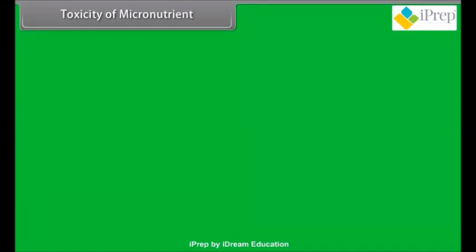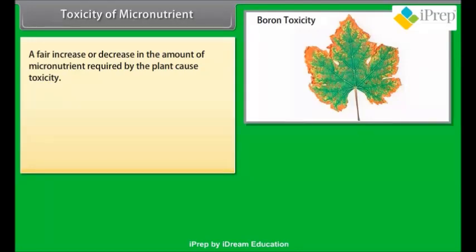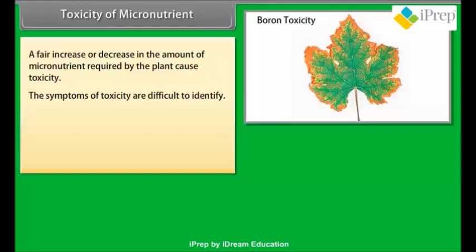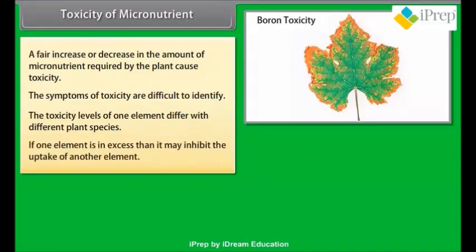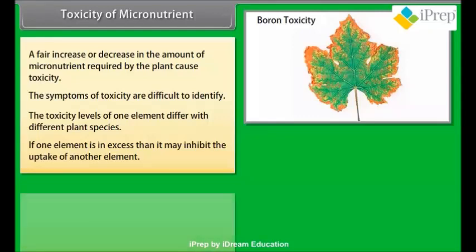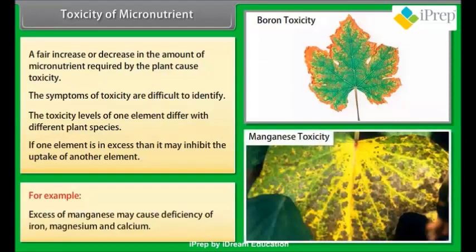Toxicity of micronutrients: a fair increase or decrease in the amount of micronutrient required by the plant causes toxicity. The symptoms of toxicity are difficult to identify. The toxicity levels of one element differ with different plant species. If one element is in excess, it may inhibit the uptake of another element — for example, excess manganese may cause deficiency of iron, magnesium, and calcium.